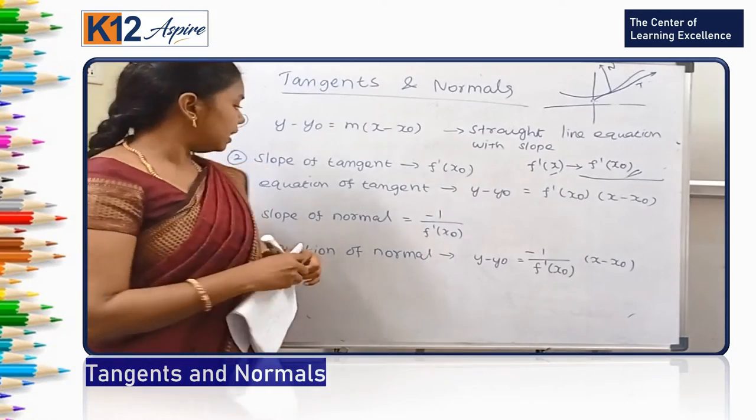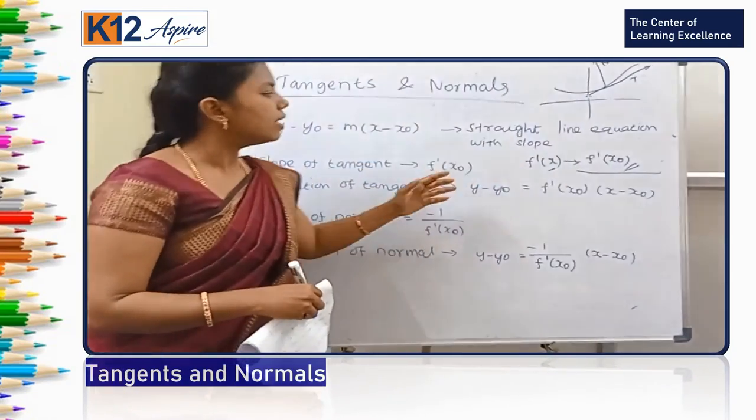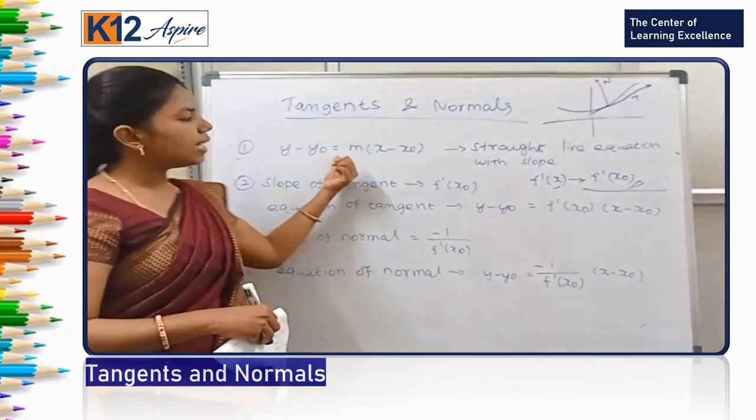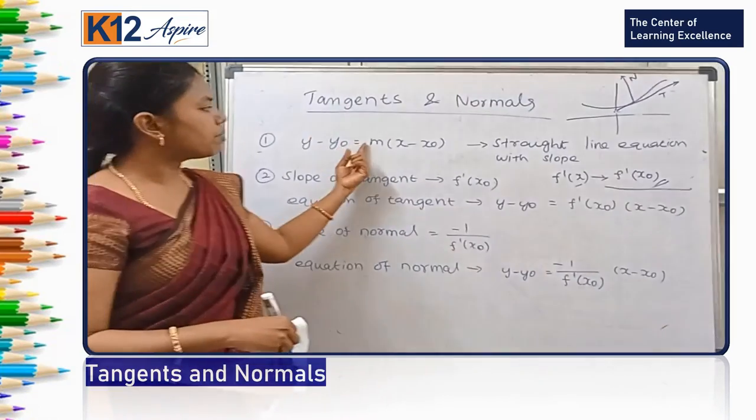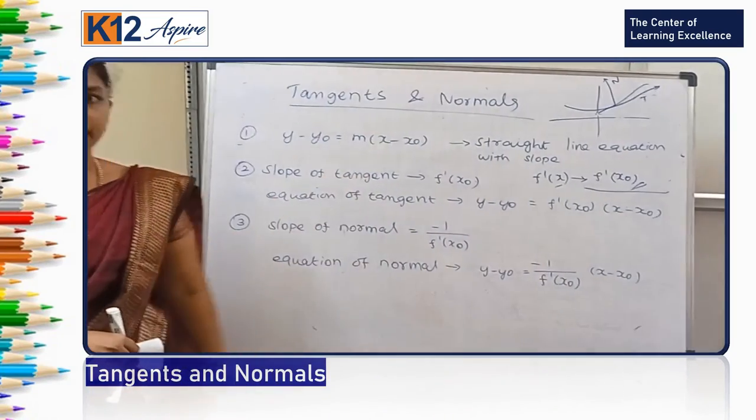If you want to find the equation of the tangent line, you just need to apply this. This is the slope and this is the line equation. You need to substitute the slope value, then you will get the equation of the tangent line.